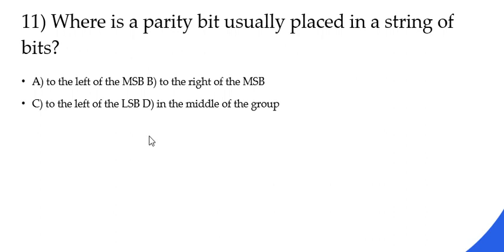Question number 11 is asking you where is a parity bit usually placed in a string of bits. So the first two choices are talking about your most significant bit, that's to the left and then to the right. And then you have to choose the other one which is your least significant binary.